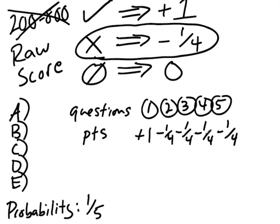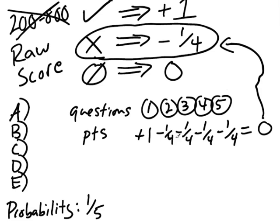You get plus one point, minus a quarter point, minus a quarter point, minus a quarter point, minus a quarter point. If I give you a dollar and then I take away four quarters, you get nothing. This zero is the reason why they actually take off a quarter point — because what the SAT wants to do is remove any benefit that you might get from randomly guessing.